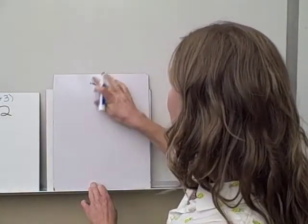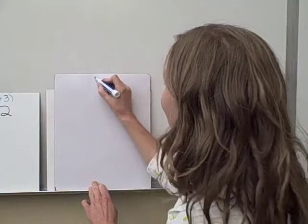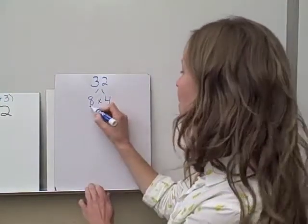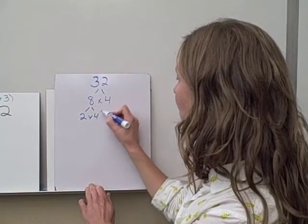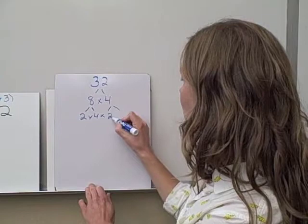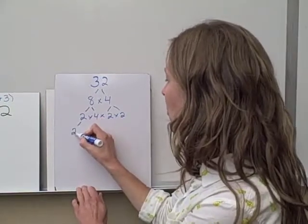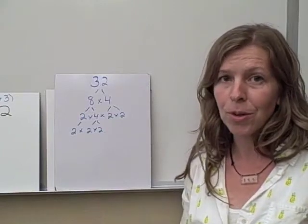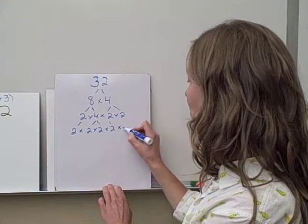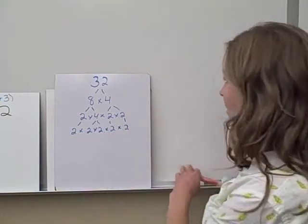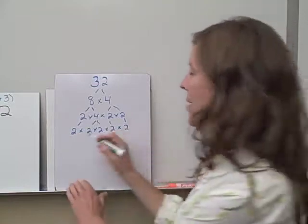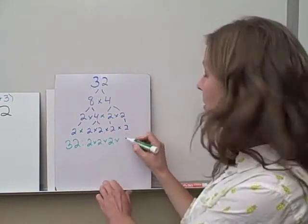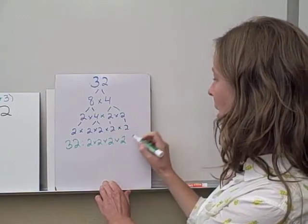Let's start with 32. I'm going to use the tree method. 8 times 4 equals 32. Now I'm going to break up 8 into 2 times 4. And I'll break up the 4 into 2 times 2. So I'm going to bring down the 2 because it's prime. Multiply that times 2 times 2. So now I'm breaking up the 4 into its 2 primes, 2 times 2. And then I'm going to bring down the other 2s. So the prime factorization of 32 is 2 times 2 times 2 times 2 times 2.